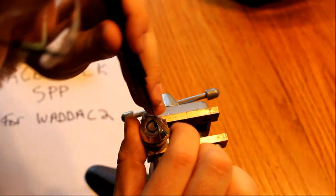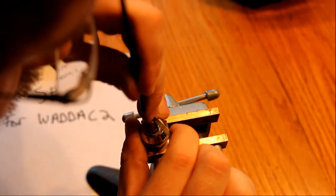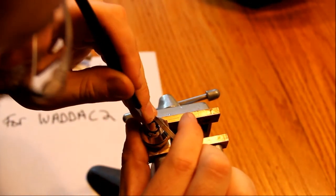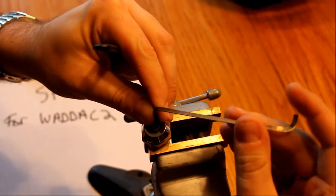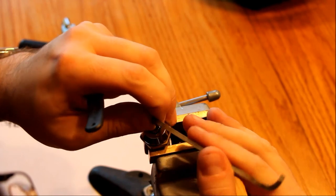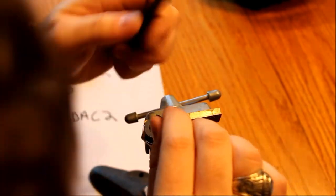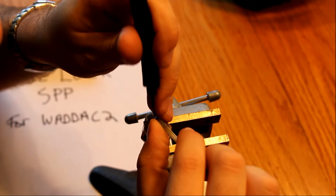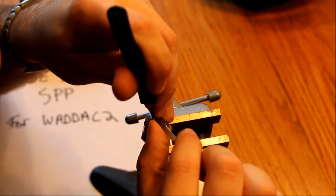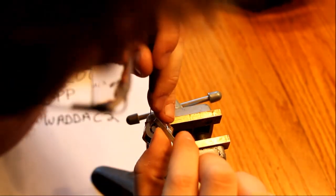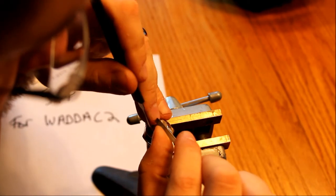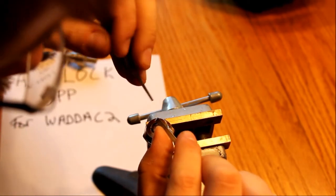One of the challenges with these things can be that the springs are different strengths to actually prevent certain types of picking. And so it gets a little tricky sometimes to judge whether something is binding or just on a tough spring.